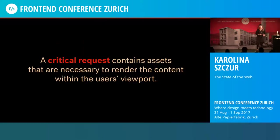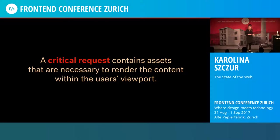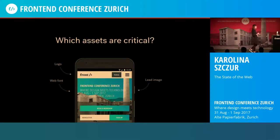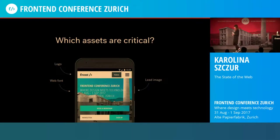Here is where one of the quite new strategies comes in, called the critical request. A request is critical when it contains assets necessary to render the content within the user's viewport. We are now able to control this behavior through setting priority on crucial resources. But what are crucial resources? Looking at the example of a conference website, obviously we need the HTML and CSS, there's a lead image, there's a logo, and there's a web font. We should mark those assets as crucial.